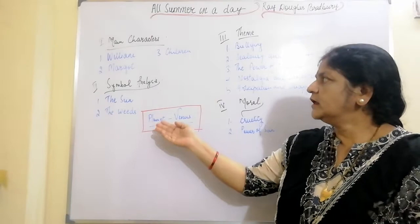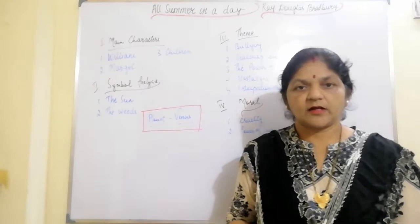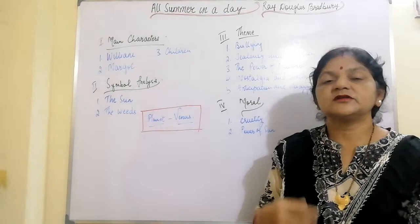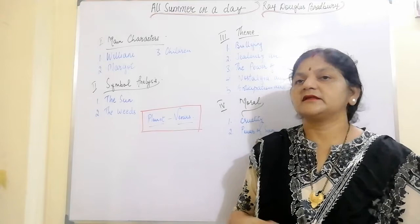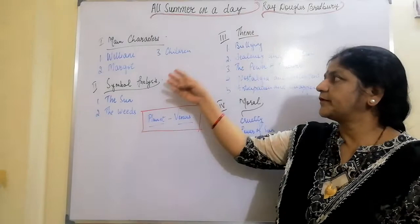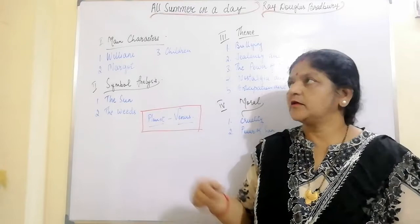Now I will discuss the story 'All Summer in a Day' along with its important characters and symbols. I will discuss the symbols and the characters used in the story so that before you know the story, you are well acquainted with all these symbols and characters. 'All Summer in a Day' is a science fiction short story by the American writer Ray Bradbury, first published in March 1954 in the magazine of Fantasy and Science Fiction.